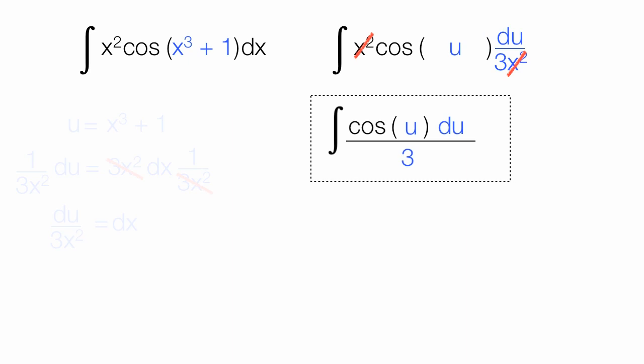I'm going to pull that 3 out by just multiplying the whole integral by 1 third, like this. Now I have 1 third times the integral of cosine u du.